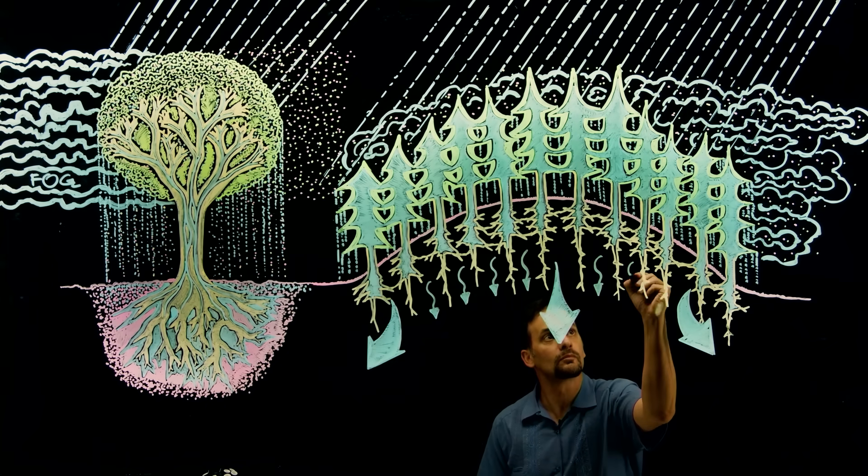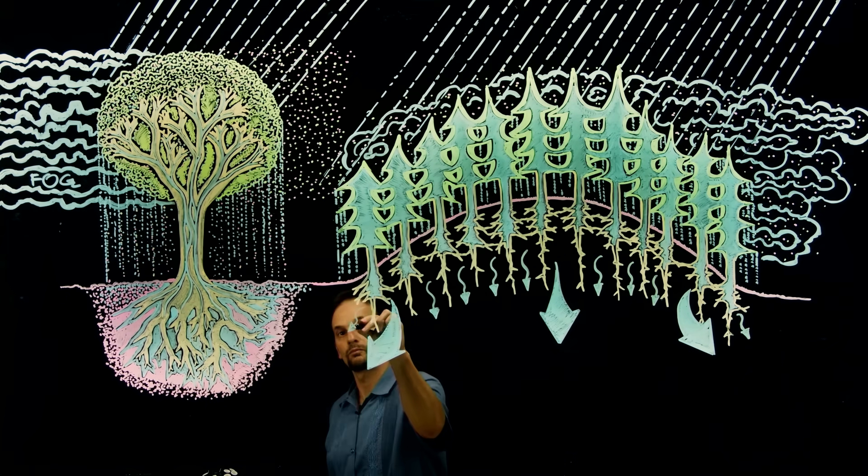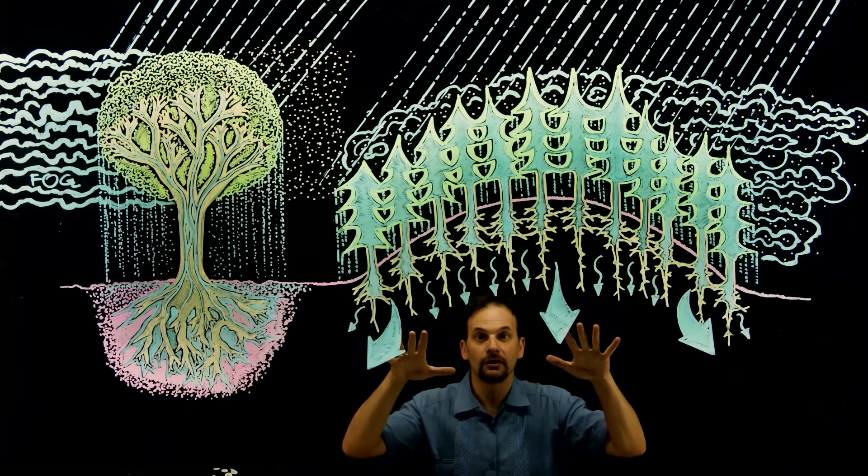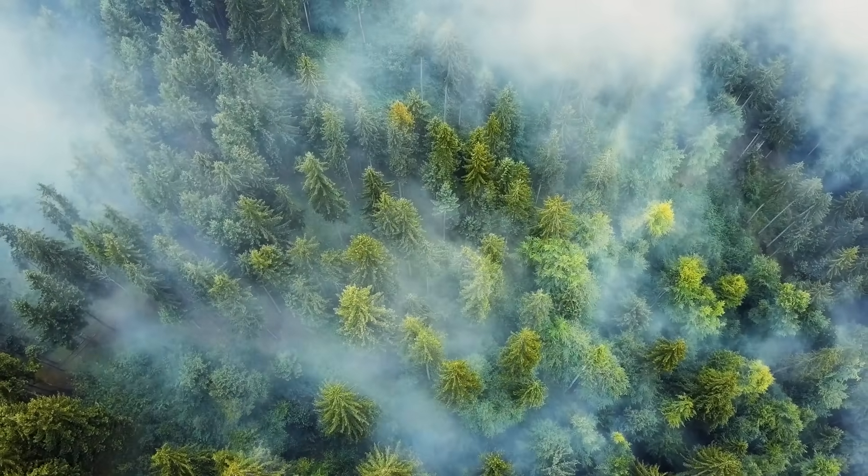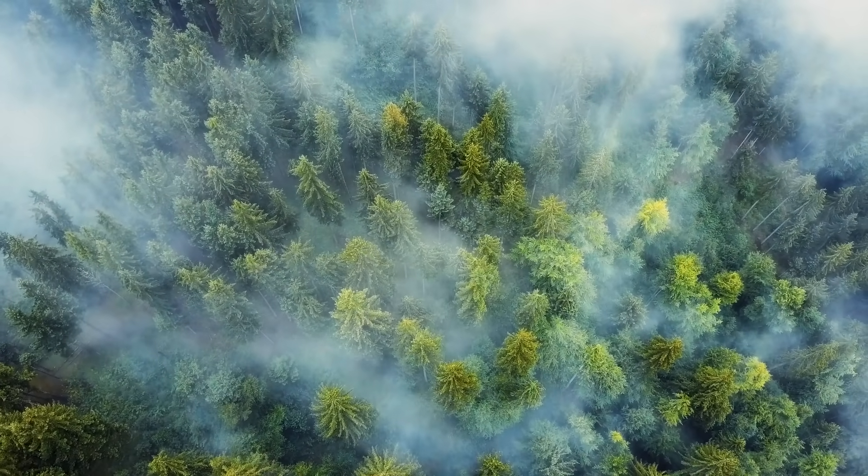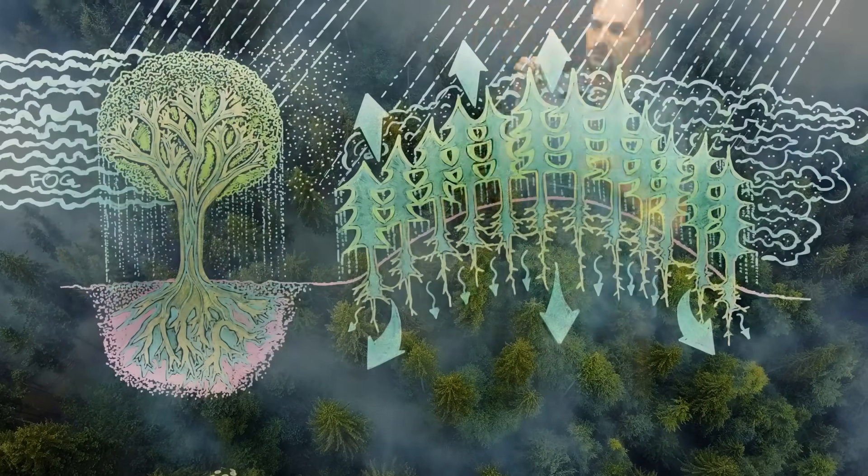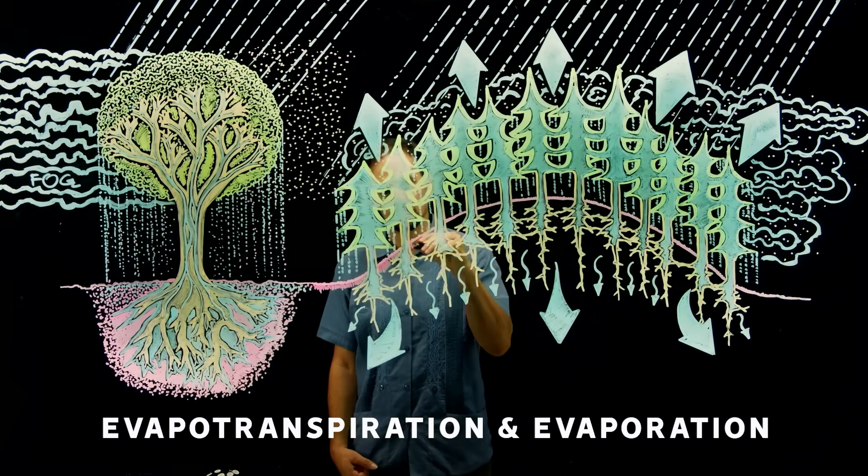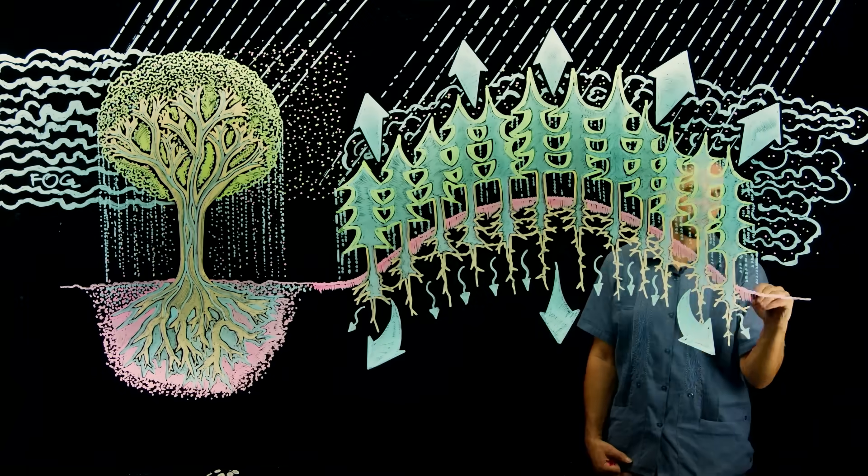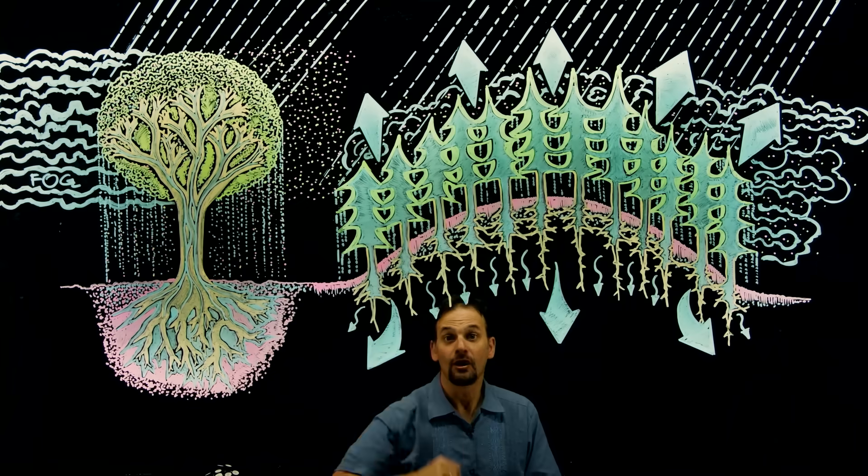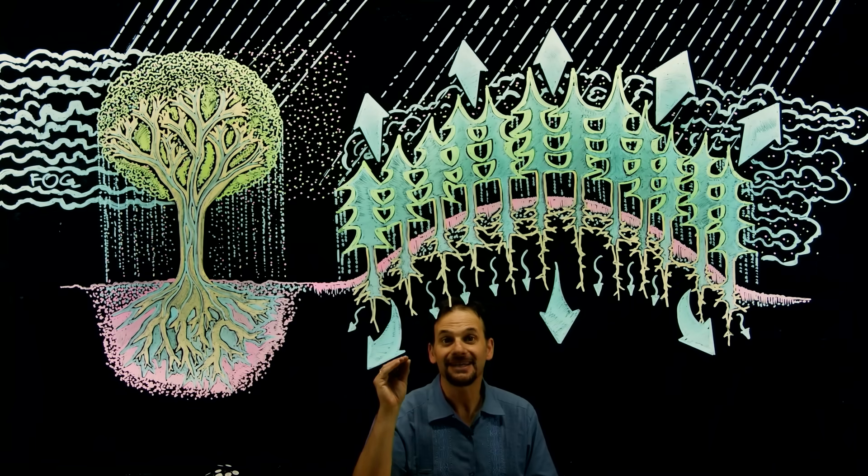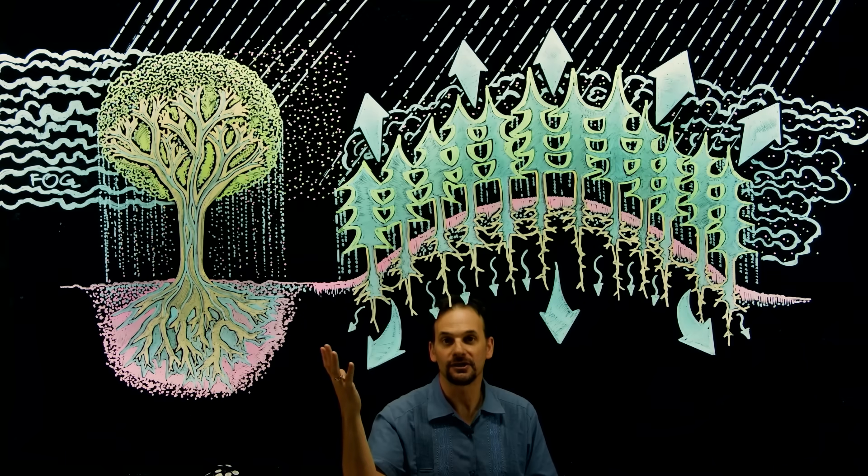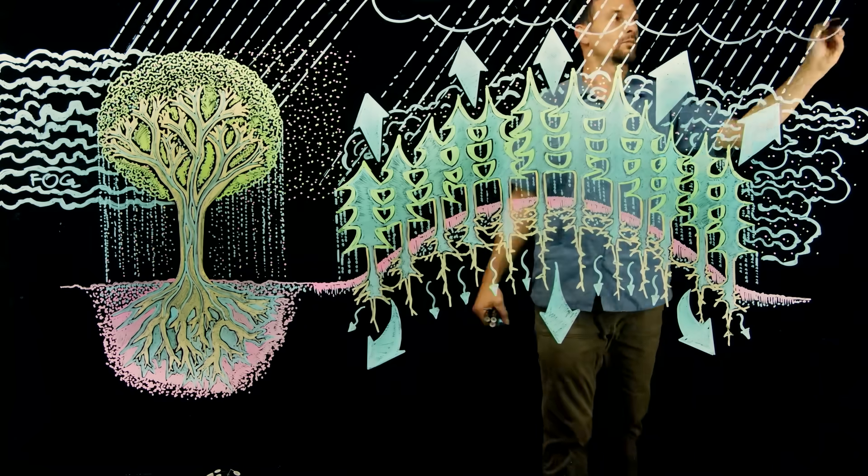But at the same time that gravity is pulling the water down, the tree is also pulling the water up and out of the leaves and back up into the atmosphere through evapotranspiration and evaporation. And it's not just water that's rising up and out of the trees. A forest releases many tiny particles like pollen, leaf dust, bacteria, fungus spores that float up into the air.